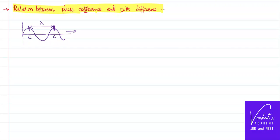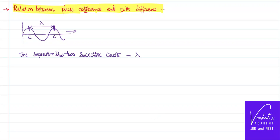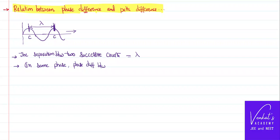Crest and crest means they are in the same phase — the same kind of position with respect to the mean position. That means the cycle is completed and the particle came back to the same kind of vibration. So the phase difference between two successive crests is zero, or you can say two pi, because the wave is completed.